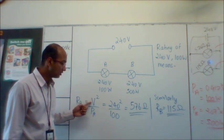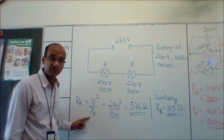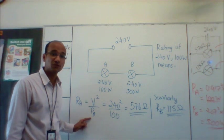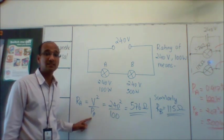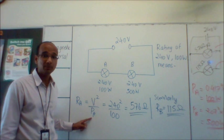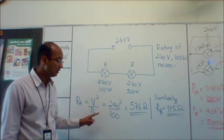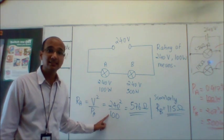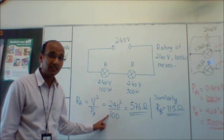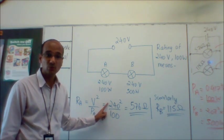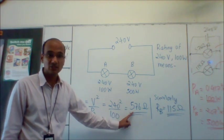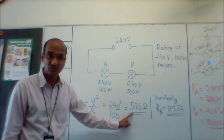is equal to V squared over power of A. Remember, if I provide a potential difference of 240V, then the power dissipated by bulb A will be 100W. So I can substitute these numbers: the resistance of bulb A equals 240 squared over 100, which gives 576 ohms.